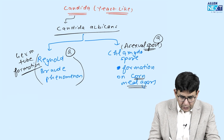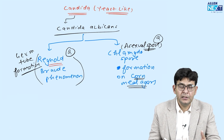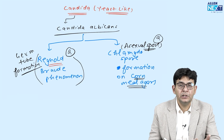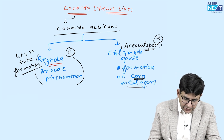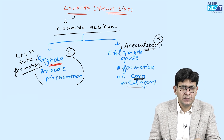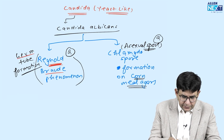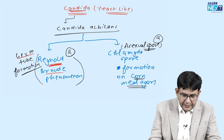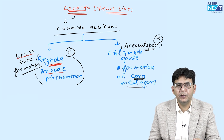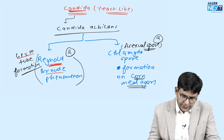To remember Reynaud's broad, use this mnemonic: 'Ronaldo brought a germ candy.' From this, you know Reynaud's is the germ tube formation, and 'candy' helps you remember it is for Candida albicans.